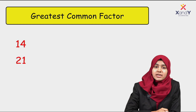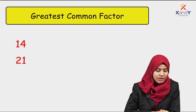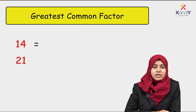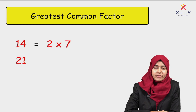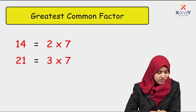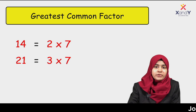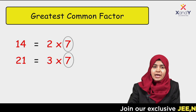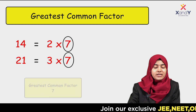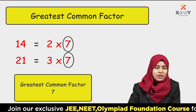Now let's find the greatest common factor of 14 and 21. The prime factorization of 14 is 2 × 7. The prime factorization of 21 is 3 × 7. The common factor is 7. So 7 is the greatest common factor of 14 and 21.